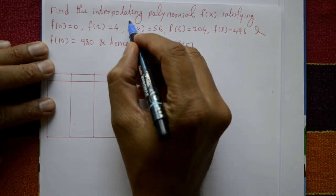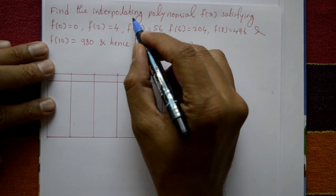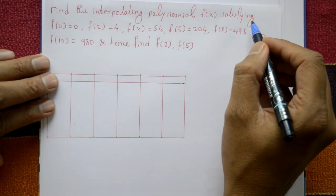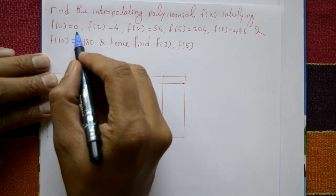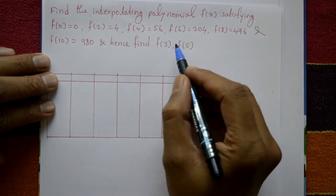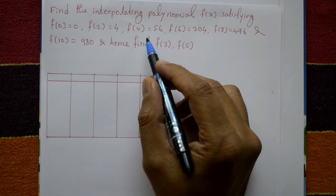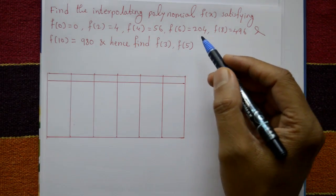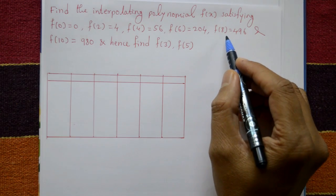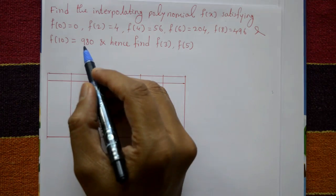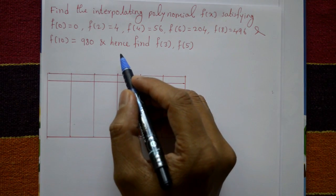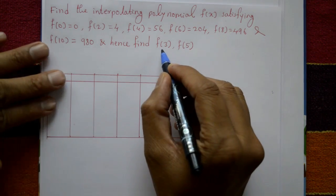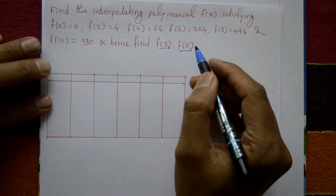Find the interpolating polynomial f(x) satisfying: f(0) = 0, f(2) = 4, f(4) = 56, f(6) = 204, f(8) = 496, and f(10) = 980. Hence find f(3) and f(5).